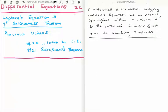First of all we call a solution to Laplace's equation a potential. Now that's for lots of reasons, just accept that for the moment. So we'll say a solution to Laplace's equation is completely specified within a volume V if the potential is specified over the boundary surfaces.